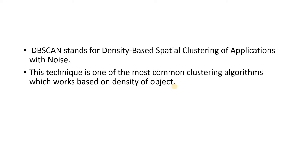An outlier is a particular data point which is kind of different with respect to other data points. Density means we will consider one particular data point as falling under a dense region if near to that particular data point lots of other data points are present. One particular data point is called an outlier if close to it a lesser number of data points are present. This is the significance of density.